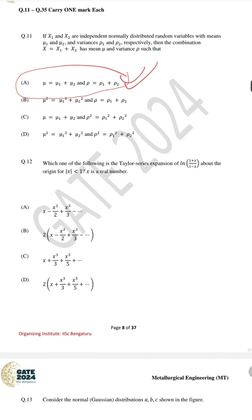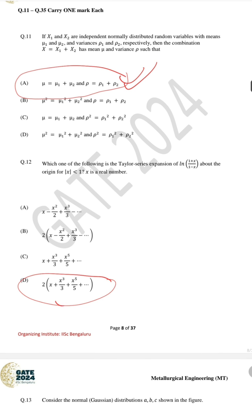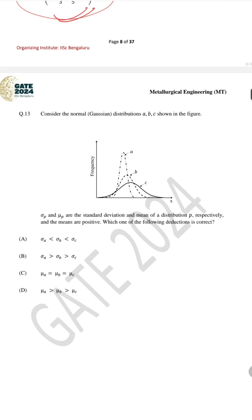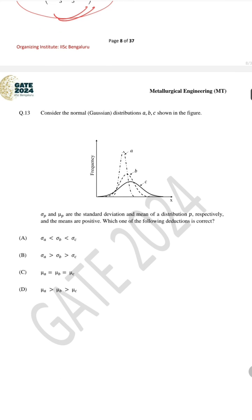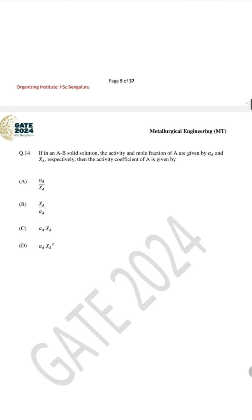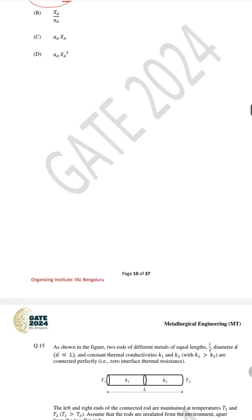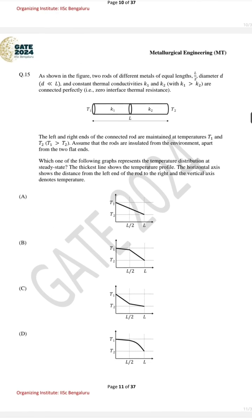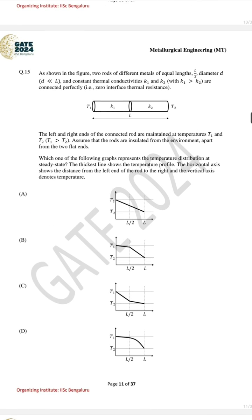For question number 12 the correct answer is D. For question number 13 the correct answer is A. For question number 15 — where activity and mole fraction is given, and activity coefficient is represented by aA/xA — the correct answer is B, which we have already discussed in the last video.